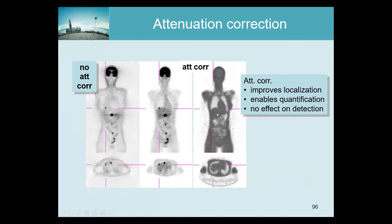The reason the contrast is so poor is, first, there is a lot of noise, but also the measurements are done at 511 keV. At those high energies, the differences between tissue attenuation coefficients are less than at lower energies. So if you want to see high tissue contrast, it's better to use very low energies.